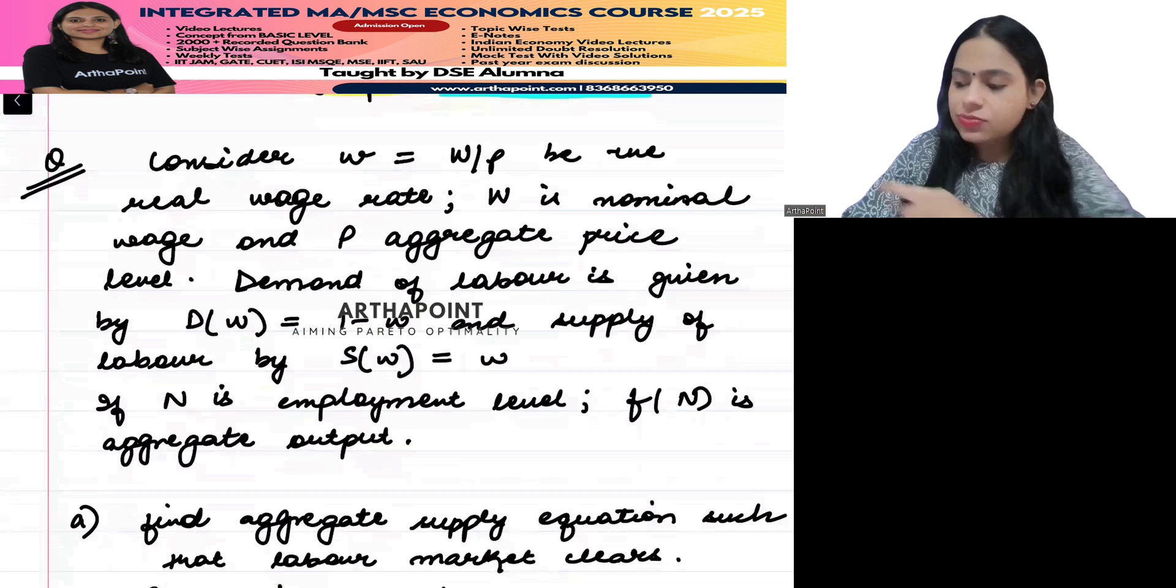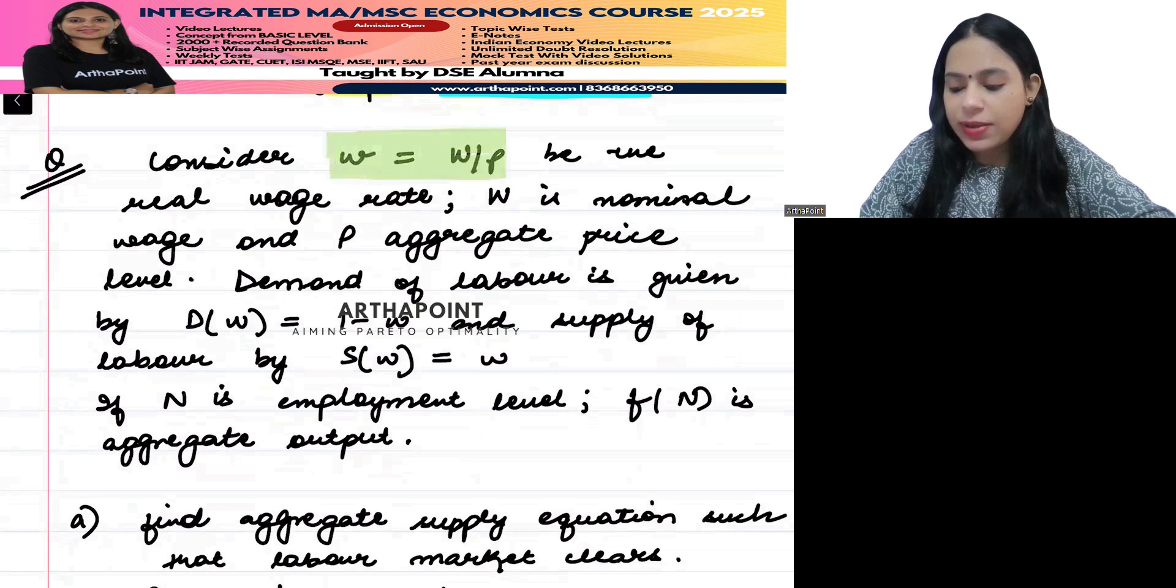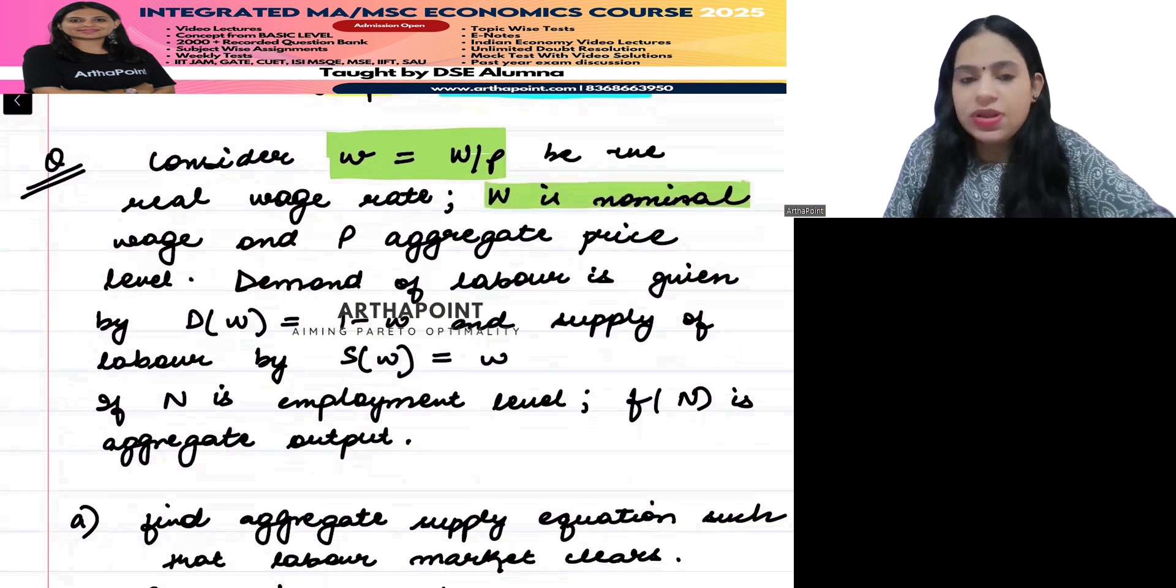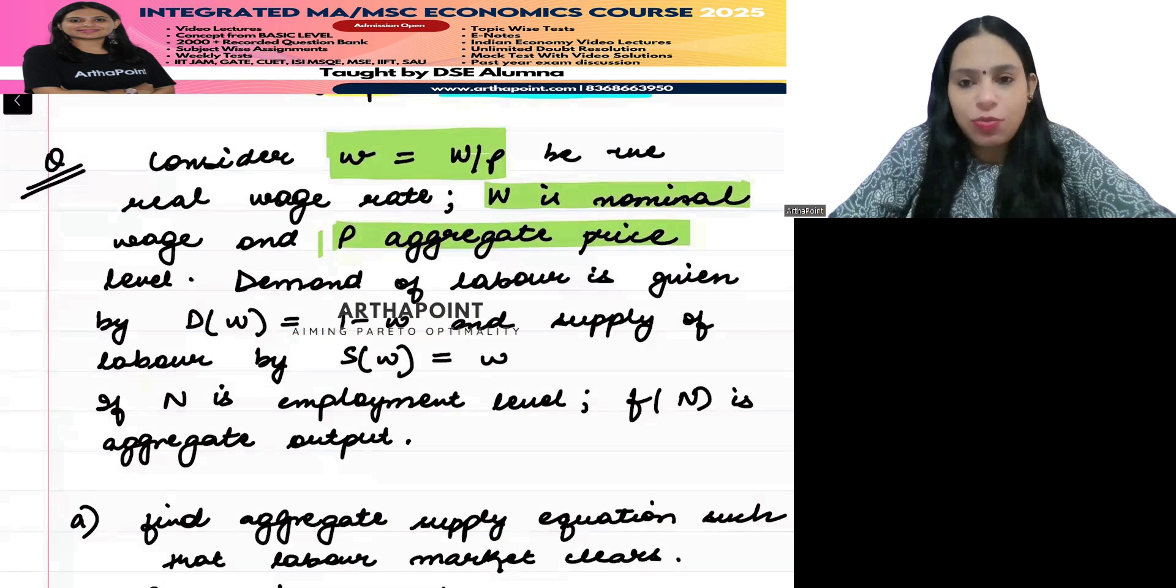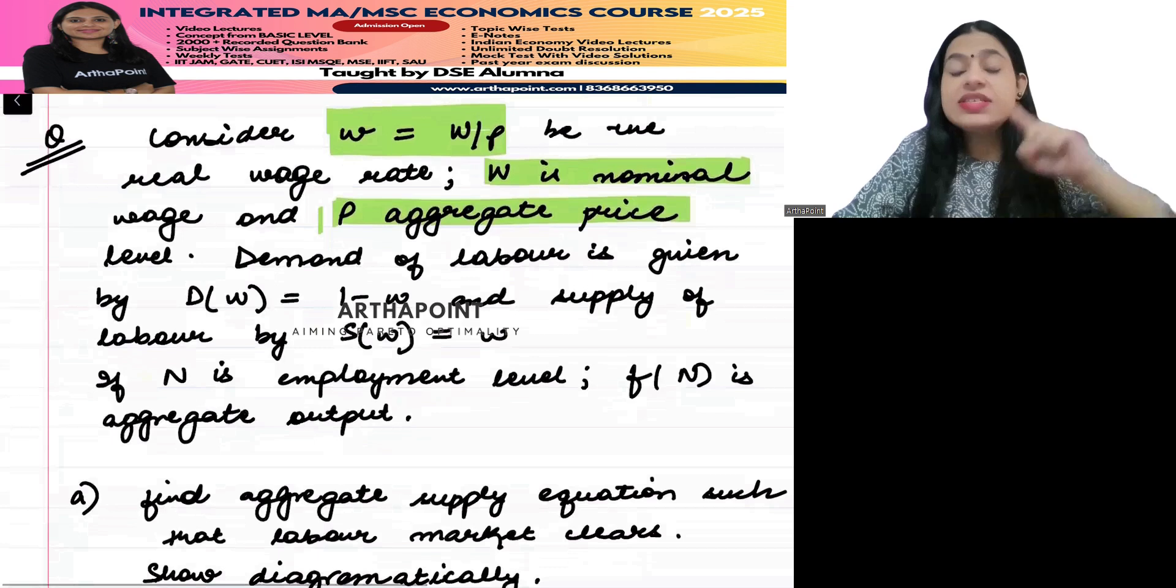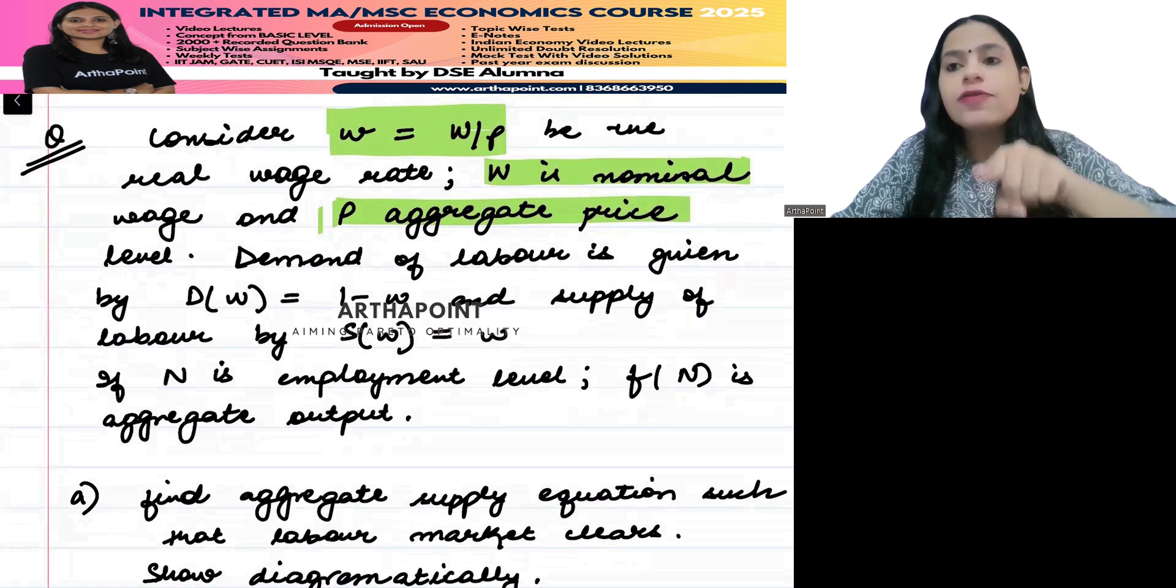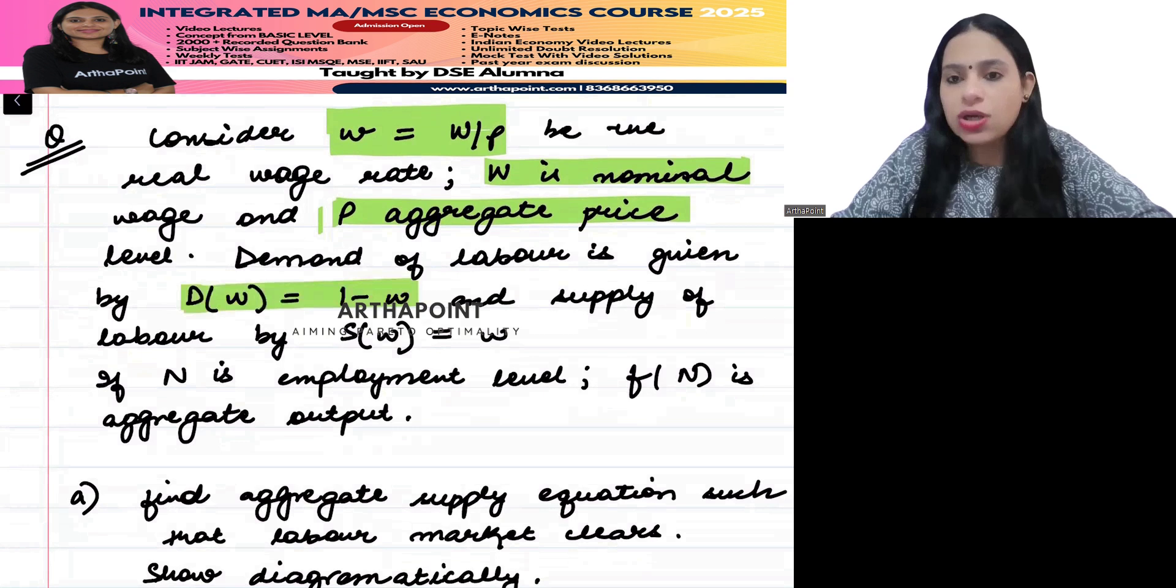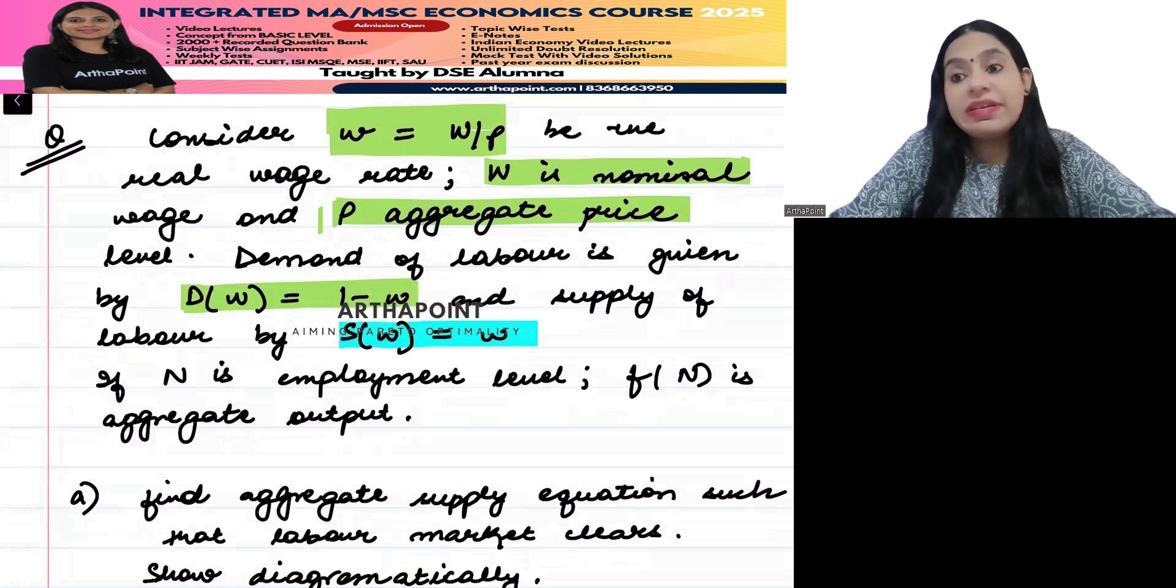Consider that you are given real wage W/P where W is the nominal wage and P is the aggregate price level. You are given that the demand of labor is a function of the real wage, and supply of labor is also given as a function of real wage.